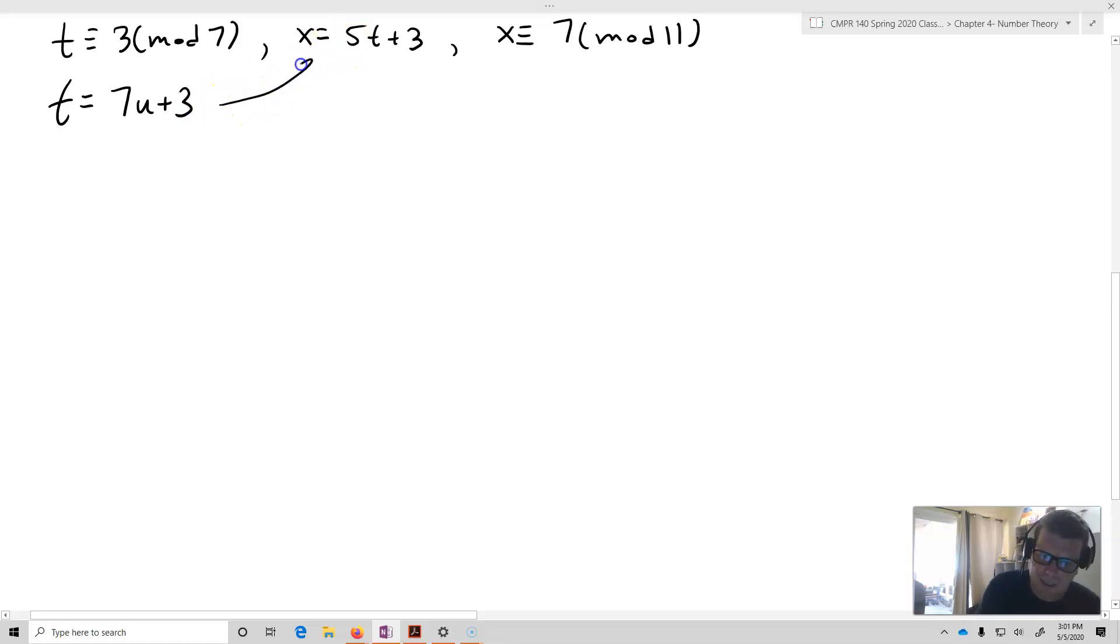And then I'm going to substitute that back in for x. So x will then equal 5 times 7u plus 3 plus 3. So all I've done is I've substituted t for u. And this will equal 35u plus 15 plus 3, which equals 35u plus 18. So that's what x is now.